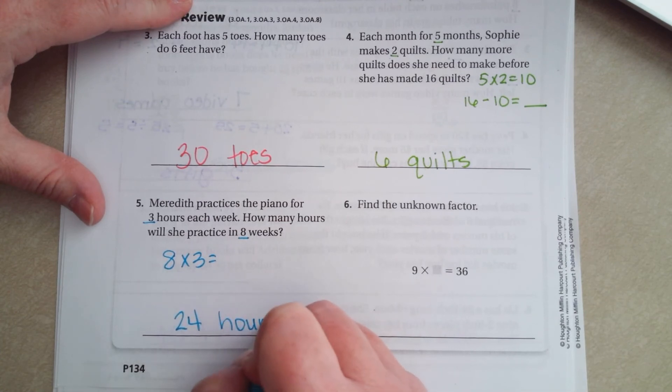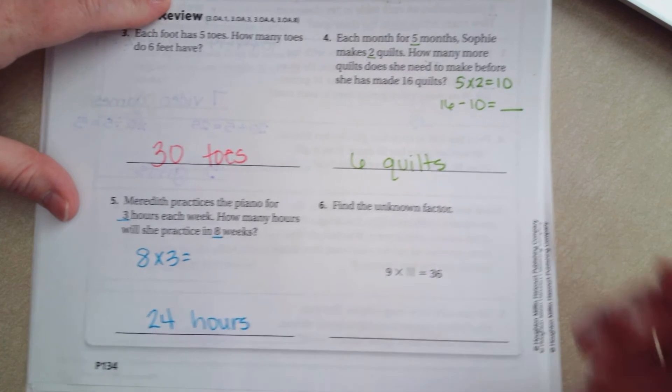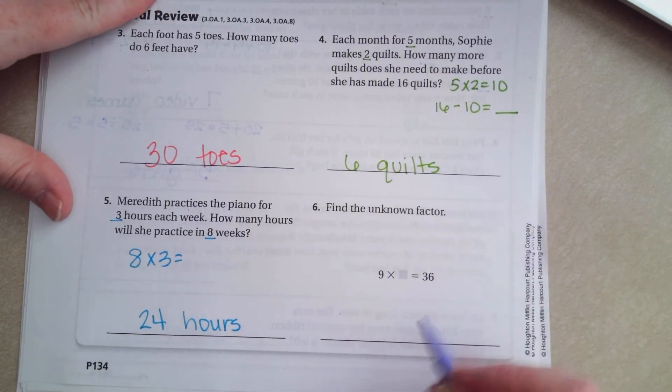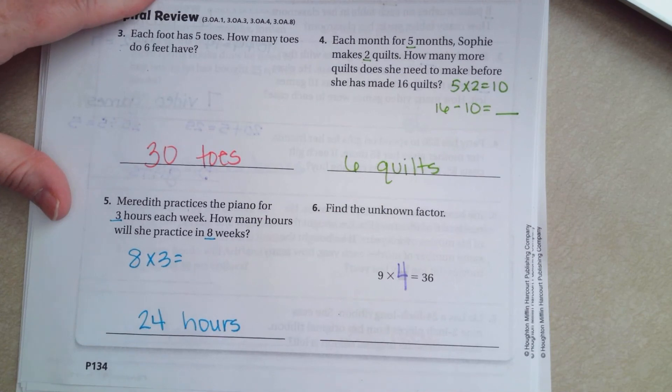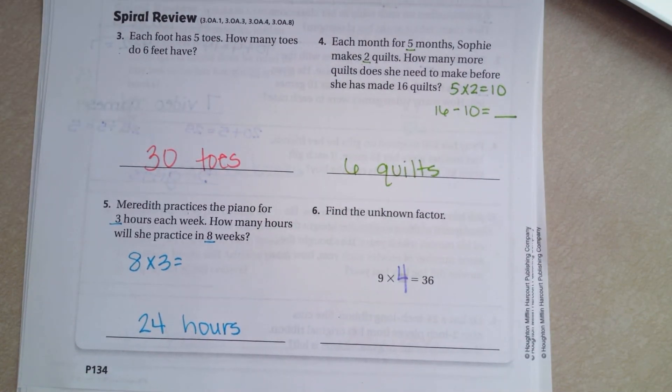Last but not least, find the unknown factor. 9 times what is 36? 9 times 4. All right guys, thanks for hanging out for 7.10. Come on back for 7.11. See you soon.